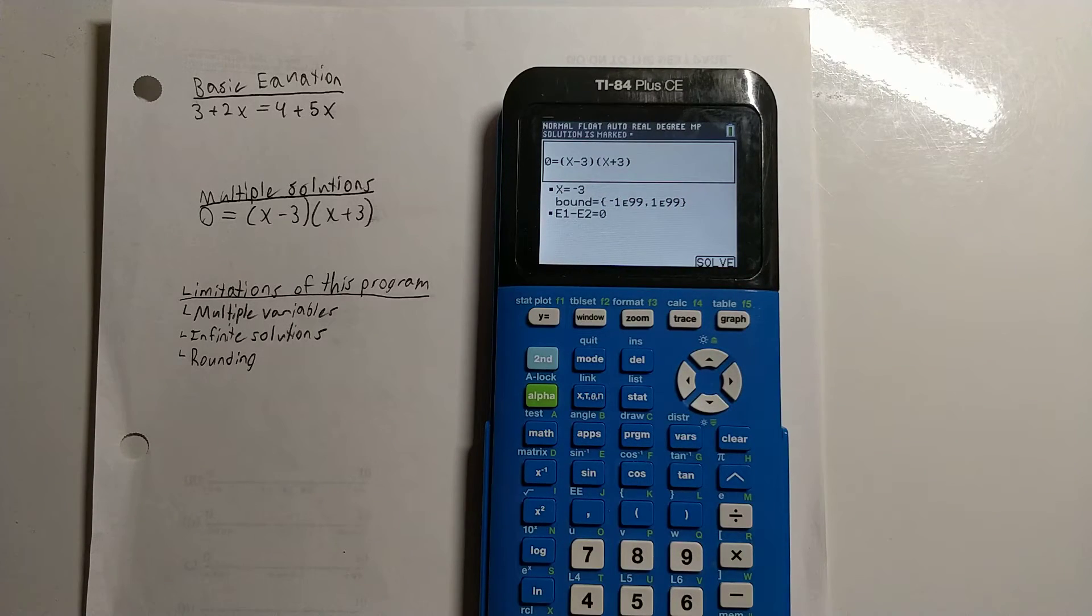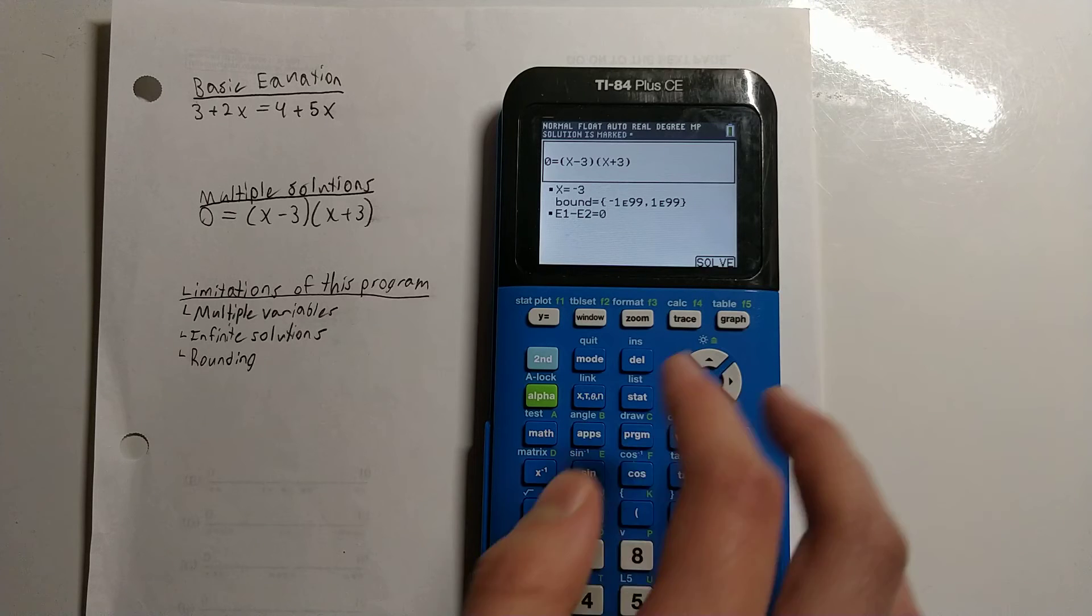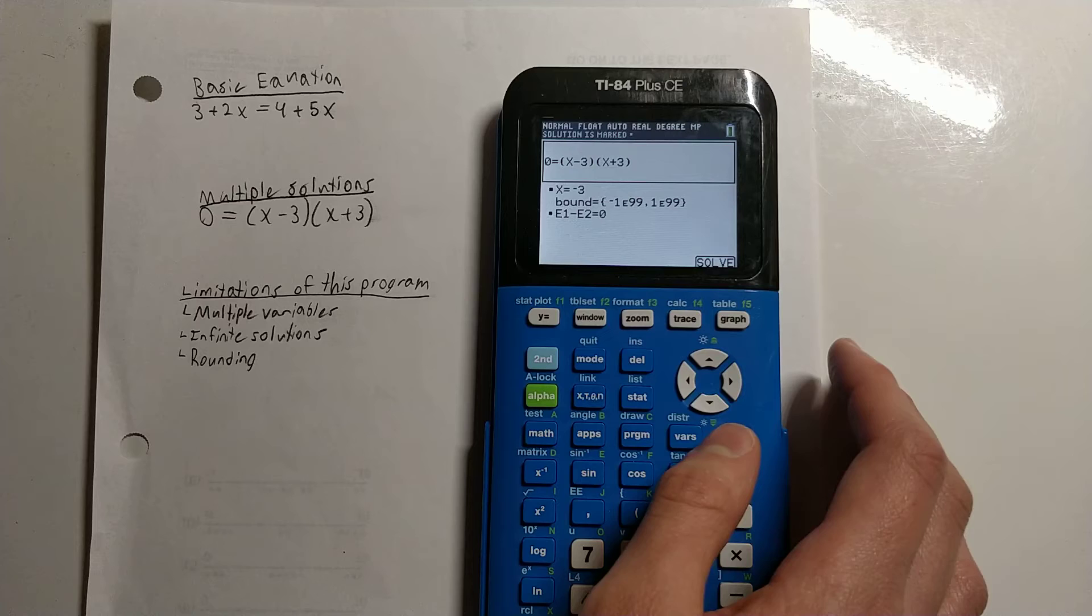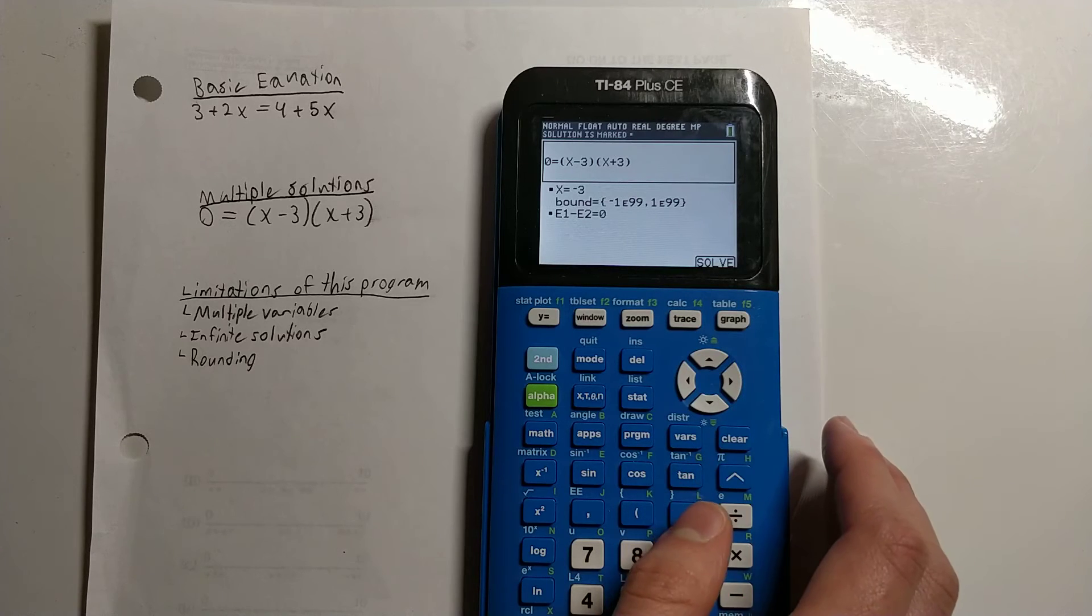So if you have an equation with multiple solutions and you want to find all of these solutions, basically the best you can do is just keep typing in random numbers and hitting Solve until you find all the solutions. There isn't really a better way to do that, unfortunately, but it's better than nothing.